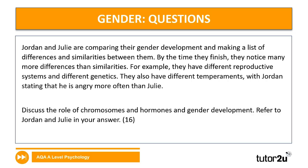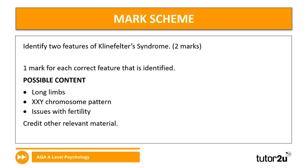Mark scheme for the gender questions. First two-marker — identify two features of Klinefelter syndrome: because the command word is identify, you just state two features. Possible features include long limbs, XXY chromosome pattern, issues with fertility, slim frame, or enlarged breasts. Just two features need to be stated — no explanation required, since the command word is only identify.